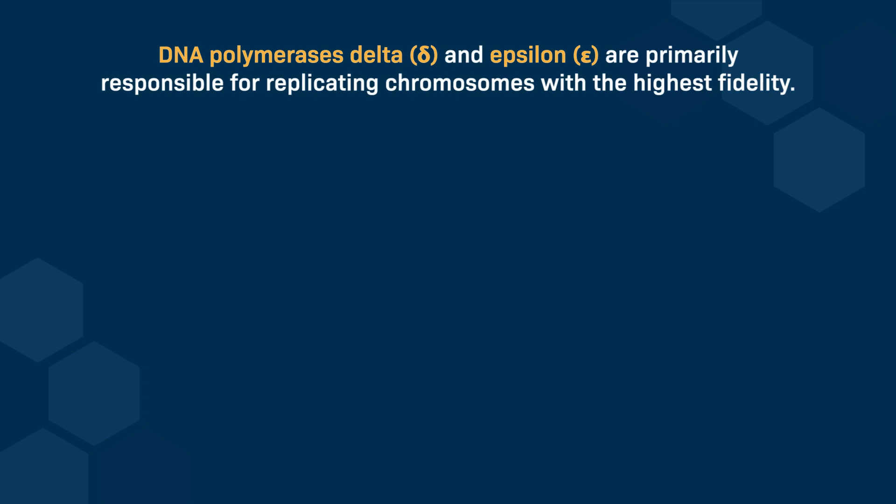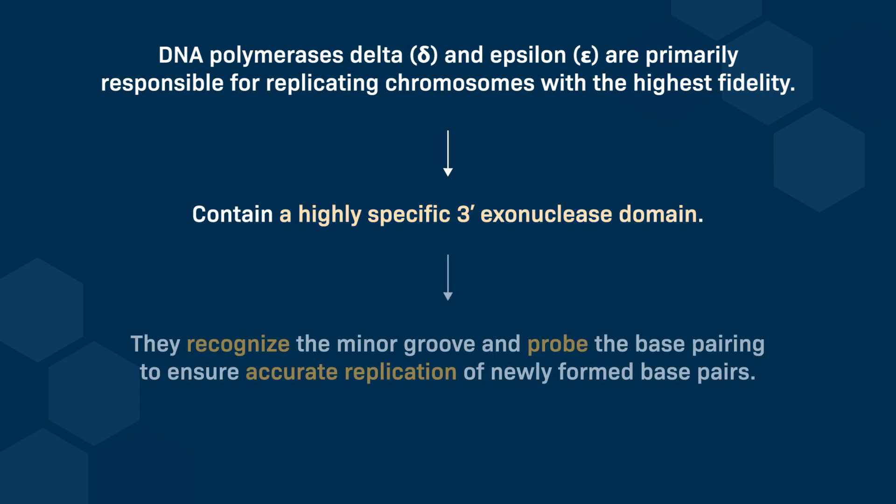DNA polymerases delta and epsilon play crucial roles in chromosome replication, ensuring high fidelity during DNA synthesis. They possess a highly specific 3' exonuclease domain that enables them to remove incorrectly incorporated nucleotides and thereby enhance the accuracy of replication. Additionally, these polymerases recognize the minor groove of the DNA helix and probe the base pairing of newly formed base pairs, which allows them to detect and correct mismatches effectively.